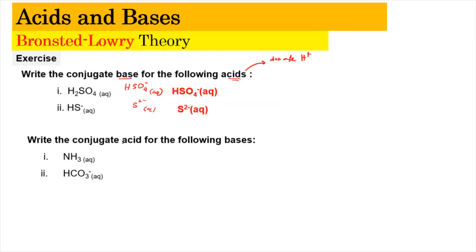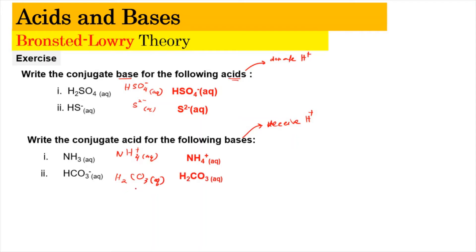For the conjugate acid, it comes from the base. The base needs to receive a proton, H⁺. So when NH₃ receives a proton, it becomes NH₄⁺ aqueous. For the case of CO₃²⁻, when it accepts a proton, the negative charge is partially neutralized, and it becomes HCO₃⁻. This is how we do these exercises.